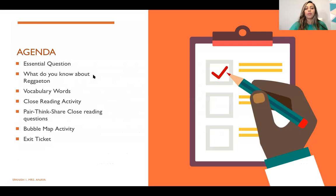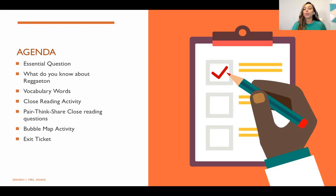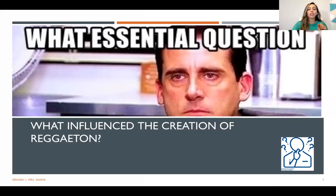Let's move forward with the agenda. We're going to start with the essential question, then move to prior knowledge about reggaeton, then vocabulary words. After that we'll do a close reading activity, a pair-think-share, close reading questions, a bubble map activity, and finally an exit ticket.